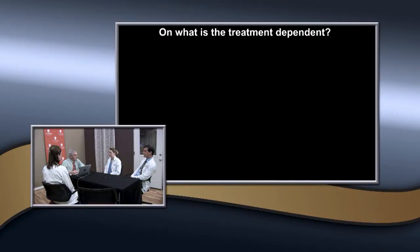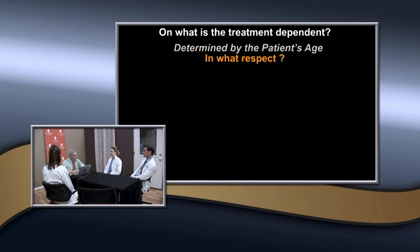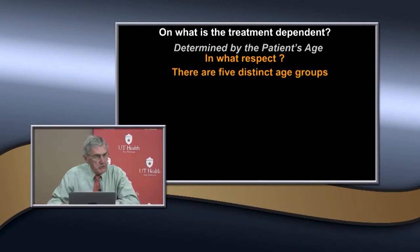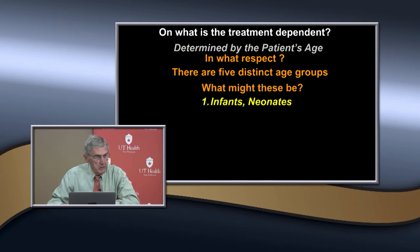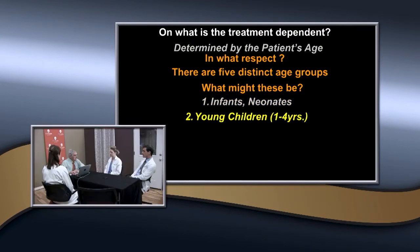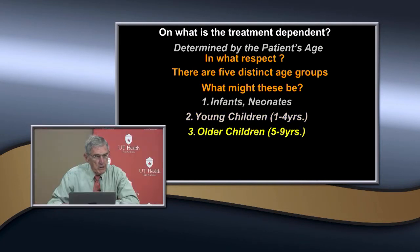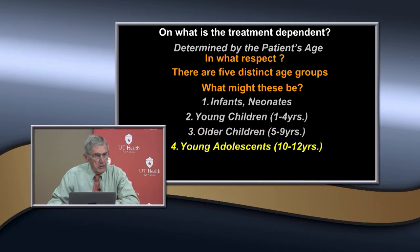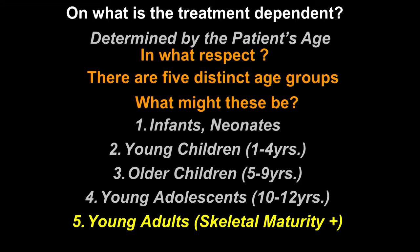Treatment is determined primarily by the patient's age. There are five distinct age groups: infants and neonates up to pre-walking age; young children; older children; young adolescents; and young adults at skeletal maturity, who are treated on basic adult principles. We also consider displacement in treatment decisions.